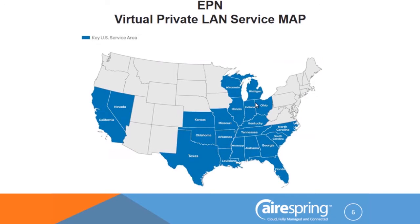Today you can quote and install this service in 21 states. Our first partner for this type of service is AT&T — AT&T will have to be the ILEC. In those states you can go into QuoteSpring today, go under EPN, and quote out the different rates. They run from 5 Mbps all the way up to 10 Gbps. We'll be adding more states as we have future trainings, with the goal of filling in all the white areas on the map.